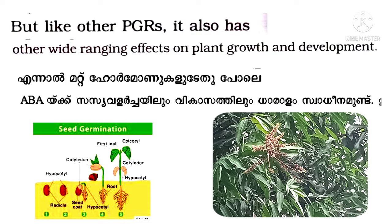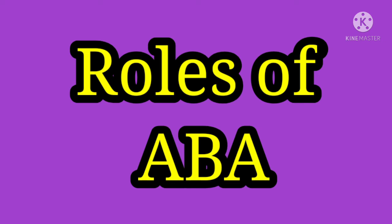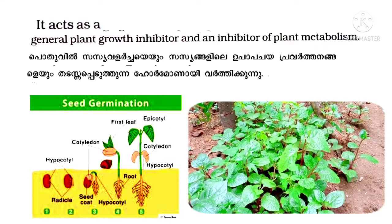Like other PGRs, ABA also has other wide-ranging effects on plant growth and development. It acts as a general plant growth inhibitor and an inhibitor of plant metabolism.